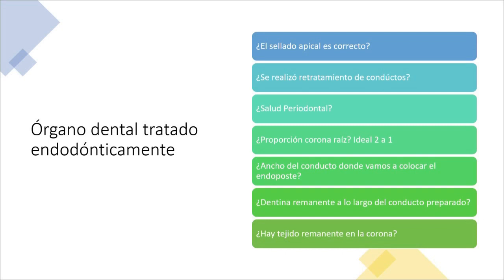¿Por qué nos enfocamos en el órgano tratado endodónticamente? Porque de entrada ya es un tratamiento heroico: estamos salvando algo a lo que tuvimos que quitarle la vitalidad, ya sea por traumatismo, caries o indicación protésica, porque si no va a fracasar nuestro tratamiento. Cuando nosotros tenemos que rehabilitar un órgano dental, debemos preguntarnos muchas cosas, no nada más ver el signo de pesos y decir endodoncia, poste y corona. Vamos a buscar la predictibilidad del mayor éxito posible en el tiempo.